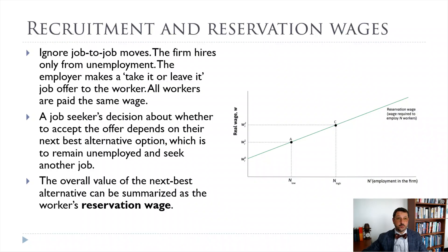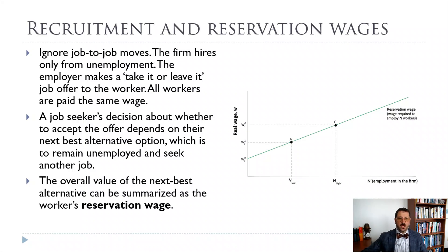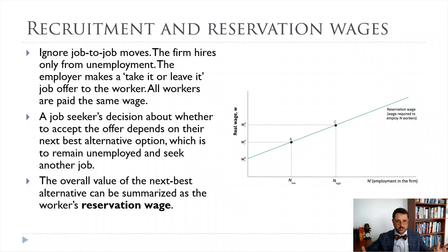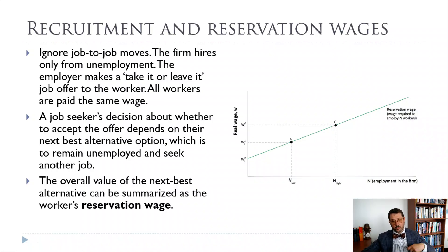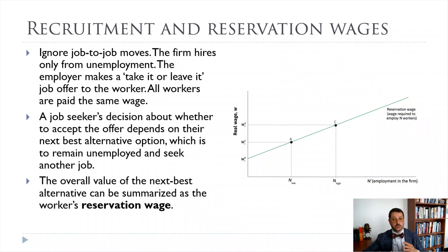The labor market is a very volatile market — there are always people entering, leaving, switching jobs, getting fired, and quitting. We're going to ignore that to some extent and think about what determines the real wage and how it's related to the number of workers in the firm. This is just an upward sloping line: the more workers the firm wants to hire, the higher the wages they'll have to pay. When the unemployment rate is really low, it's a lot easier to find a job. Your employment rent is lower, and so you'll have to be paid more to take that job.